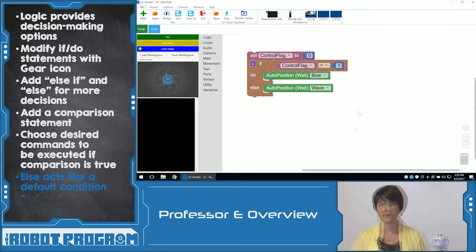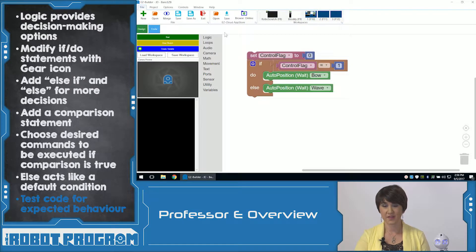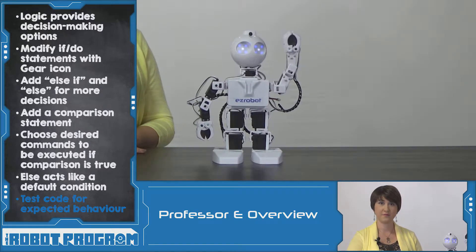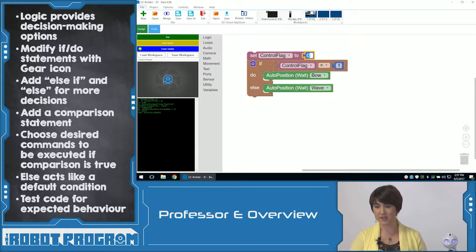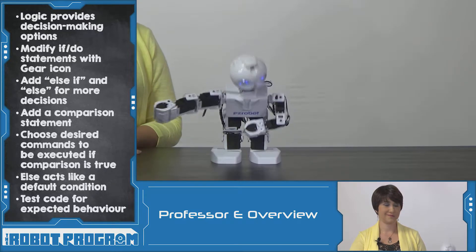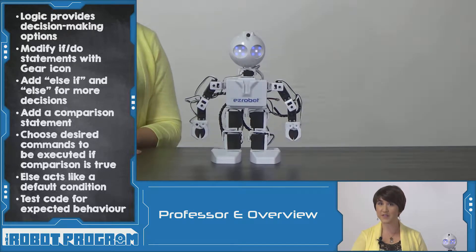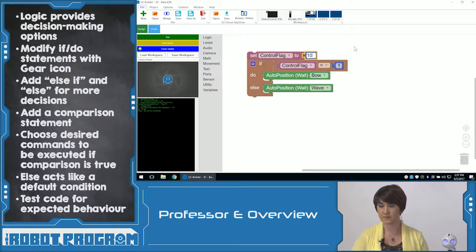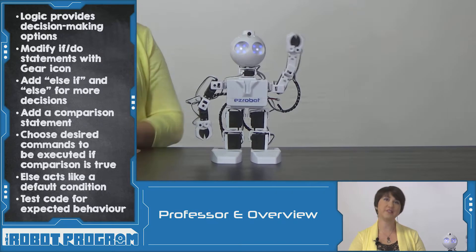Why don't we try this code and see what it looks like. Let's start the script and see what happens when we execute it. So we said the ControlFlag is equal to zero. If it's equal to one, he should bow; otherwise he should wave. So it's equal to zero, so he should wave. Let's click start. Okay, so he waves — that's good. Let's set ControlFlag to one. Now we expect him to bow. There we go. So we're using our variable called ControlFlag to execute two different options for the robot. Let's change ControlFlag to ten. It's not equal to one, which means it does the else, so he should wave. Perfect. Our code does exactly what we want it to do.